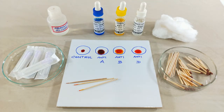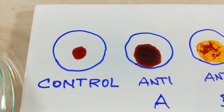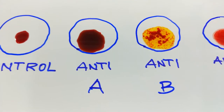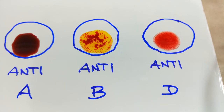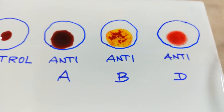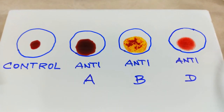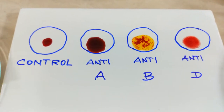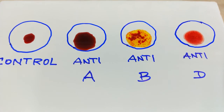Leave it for 2 minutes. Examine the mixture for the presence or absence of agglutination and record your result. Tabulate the results for your class and compare it with Indian and global distribution percentages. In this result, the control blood shows no change, anti-A shows no agglutination, but anti-B and anti-D show agglutination — meaning clumping occurred in B and D. So this blood group is B positive.